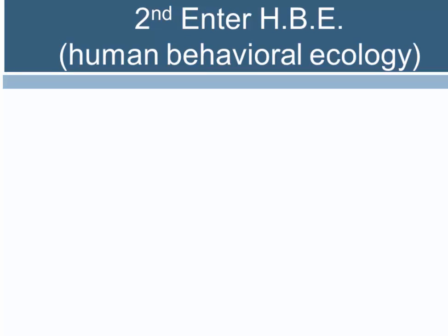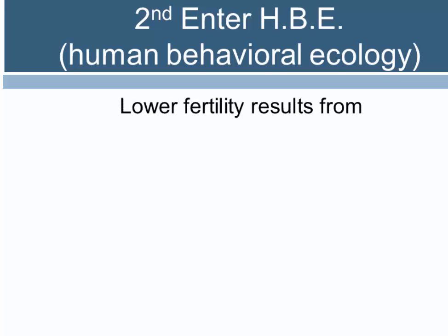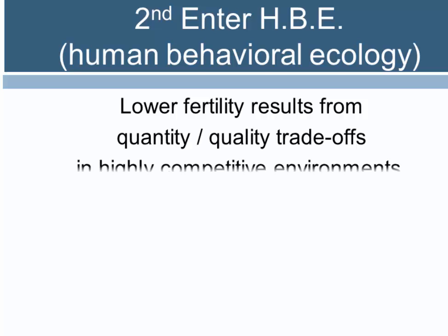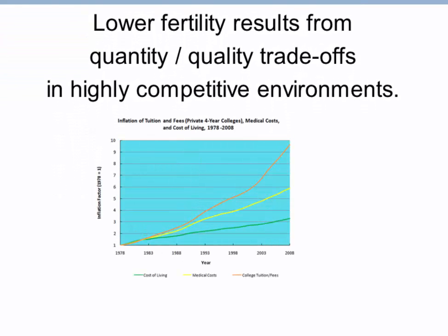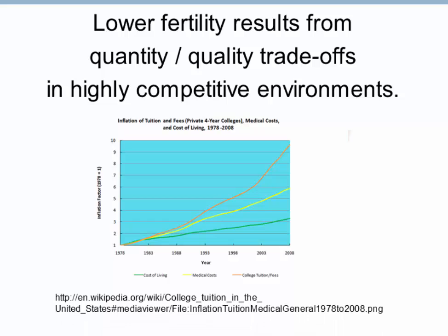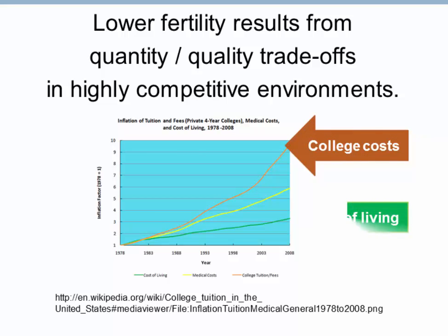Unlike arguments about increased fat, sugars, and calories in the industrial diet being maladaptive, it's rather hard to identify the maladaptive elements of increased wealth. Human behavioral ecologists focus on how humans adjust behavior to produce adaptive outcomes, and their hypothesis to explain the great slowdown is a quantity-quality trade-off. In a highly competitive environment, one example is the tremendous increase in the cost of college — if you have fewer children, you'll have more resources to support them.